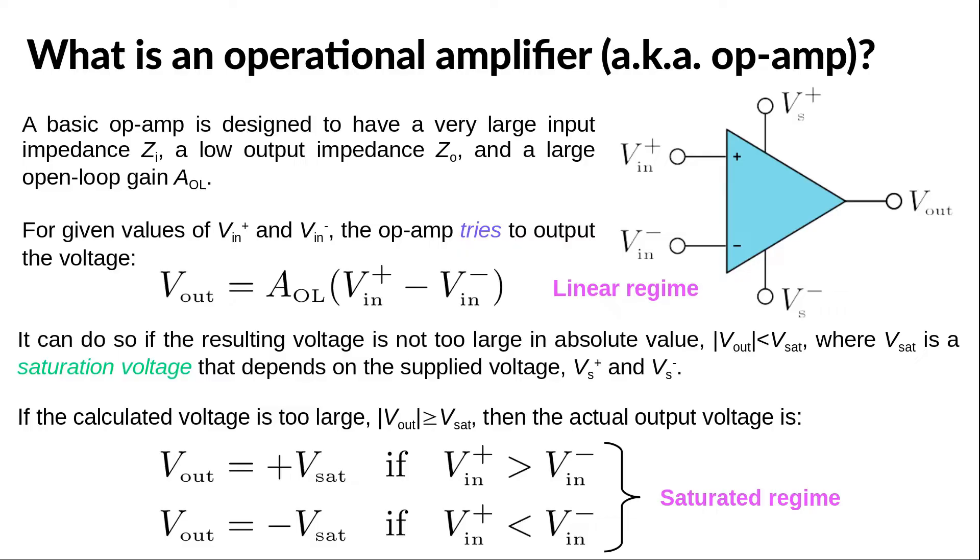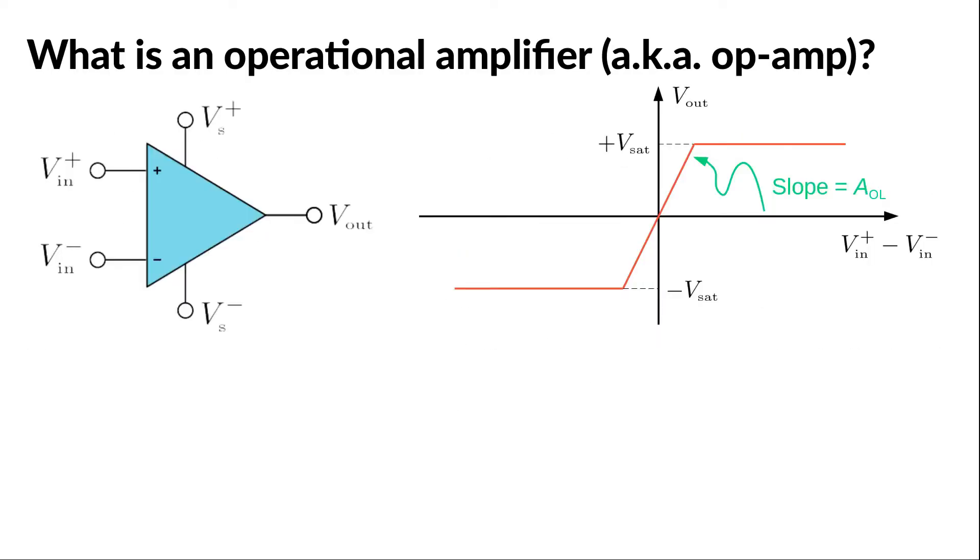We can summarize this behavior of the op-amp with this graph that shows the output voltage as a function of the difference in input voltages. The oblique region of the graph, which has a slope equal to the open-loop gain A_OL, is the linear region. Whereas, the two regions where the graph is flat are the saturated regions.